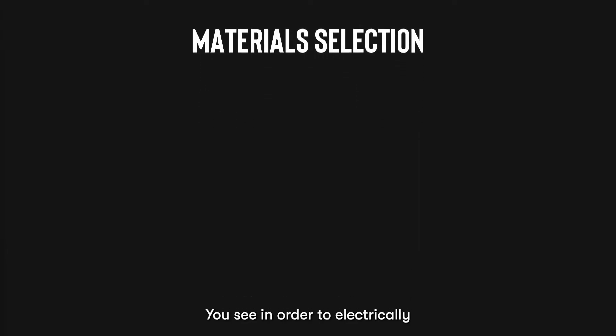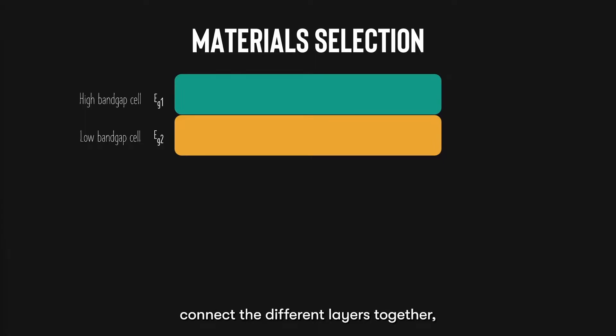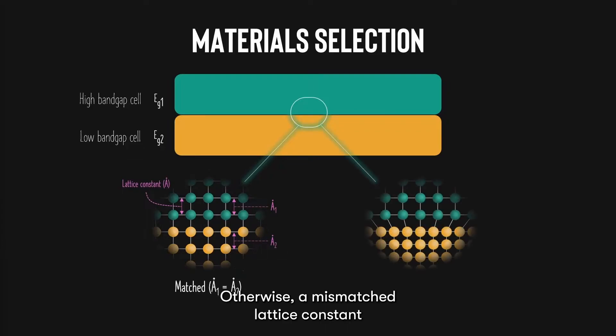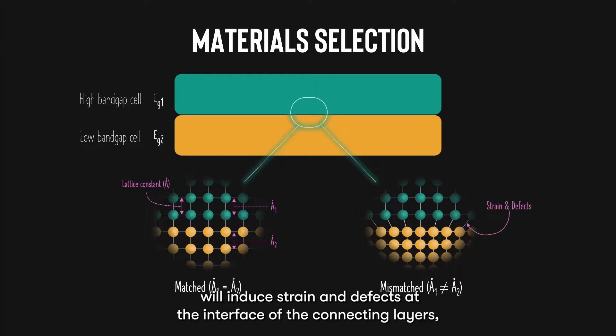You see, in order to electrically connect the different layers together, we need to ensure that these layers have the same lattice constant, such that the lattice connection at the interface is continuous. Otherwise, a mismatched lattice constant will induce strain and defects at the interface of the connecting layers, preventing efficient charge transport.